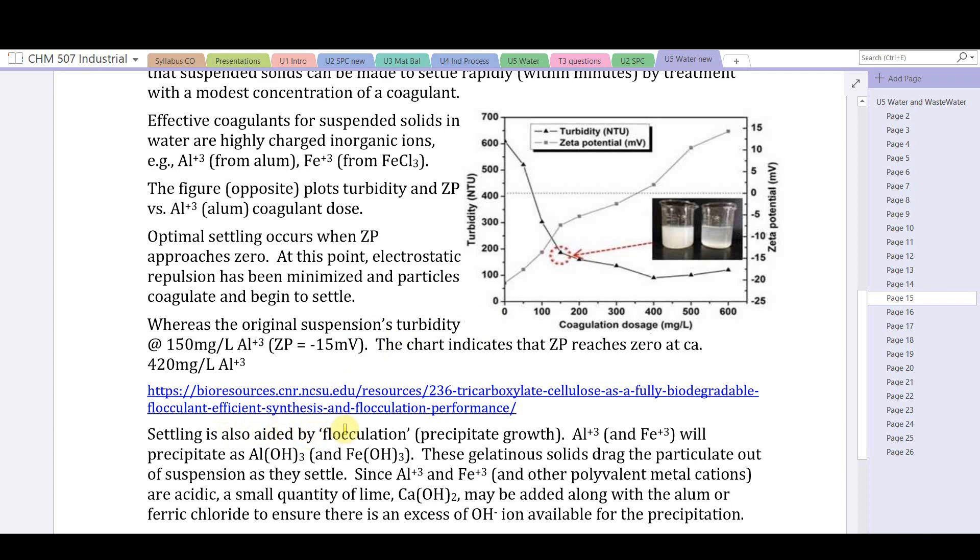Settling is also aided by flocculation or precipitate growth. Aluminum iron and ferric iron will precipitate out as aluminum hydroxide and ferric hydroxide. These gelatinous solids drag the precipitate out of suspension as they settle. Since aluminum 3+ and iron 3+ and other polyvalent metal cations are acidic, a small quantity of lime (a base) may be added along with the alum or ferric chloride to ensure there's enough hydroxide available for the precipitation.